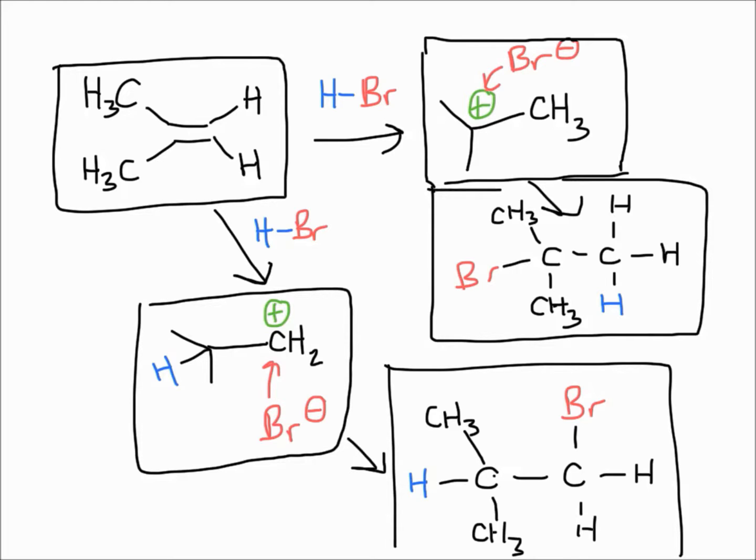As you can see, there are essentially two different paths you can undergo. Path one goes this way and path two goes that way. The main difference is the carbocation, and it all depends on carbocation stability.